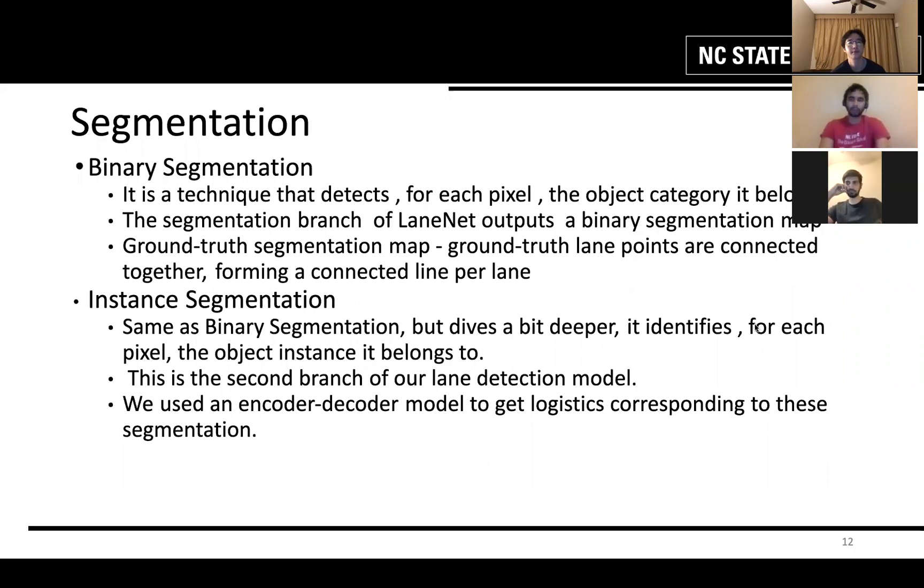Now I'm going to discuss about segmentation. We are using two kinds of segmentation here. The first one is binary segmentation. It is a technique that detects for each pixel the object category it belongs to. The segmentation branch of LaneNet outputs a binary segmentation map. And in our network, the ground truth points are connected together forming a connected line per lane. And that's how we are able to detect a particular lane.